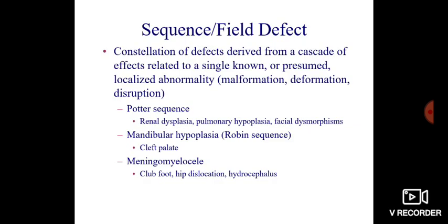A sequence or field defect is a constellation of defects derived from a cascade of effects related to a single known or presumed localized abnormality, such as malformation, deformation, or disruption. For example, renal dysplasia can lead to Potter sequence because of pulmonary hypoplasia and facial dysmorphism.